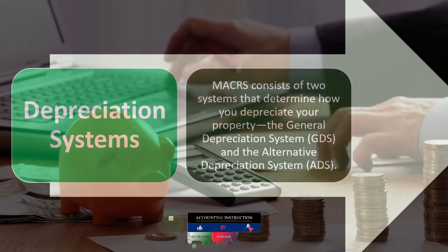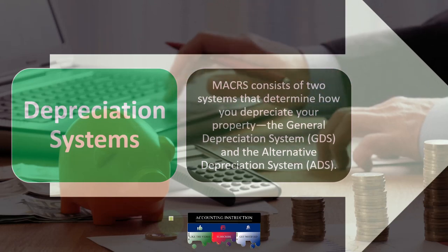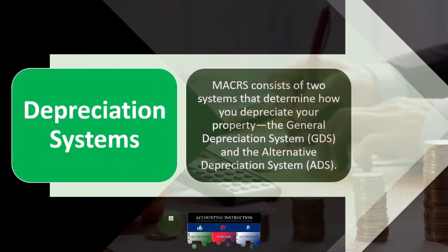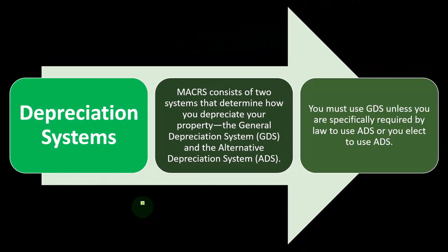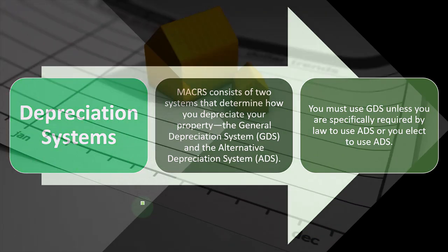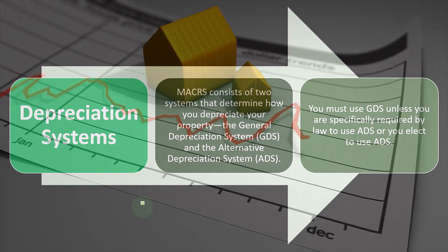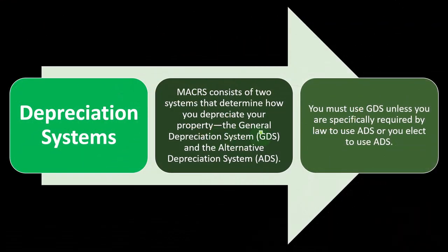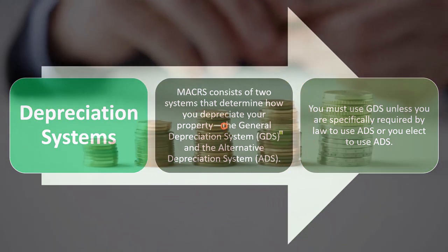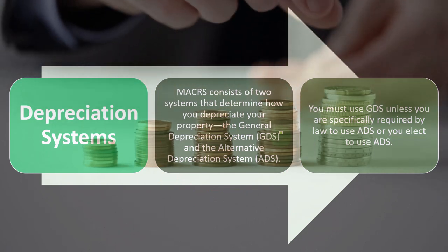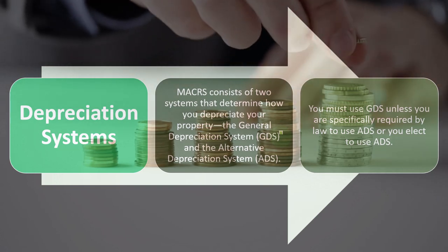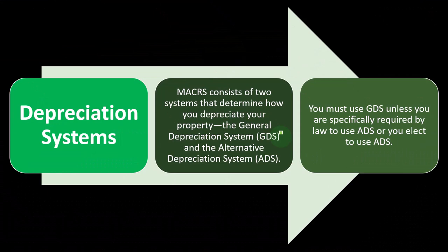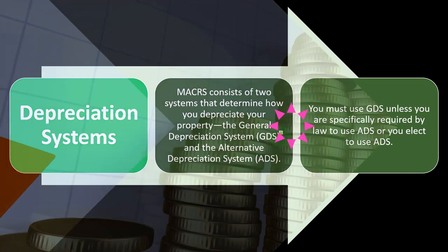MACRS consists of two systems: the General Depreciation System (GDS) and the Alternative Depreciation System (ADS). You must use GDS unless specifically required by law to use ADS, or you elect ADS. Most people default to GDS because it's advantageous — it uses double-declining balance for some property classes, accelerating deductions. However, there are circumstances where you might be required to use, or might elect to use, ADS.